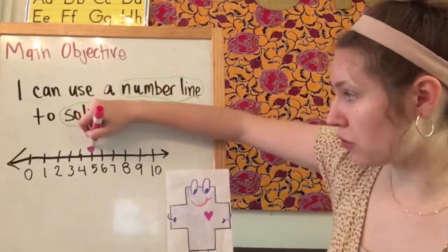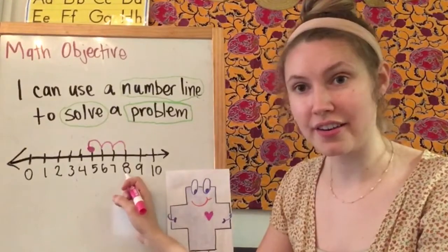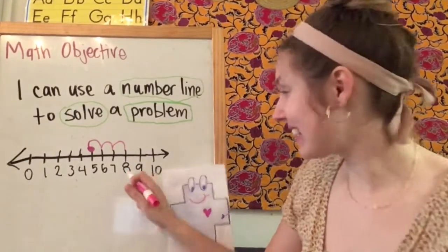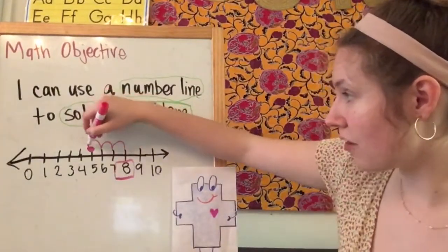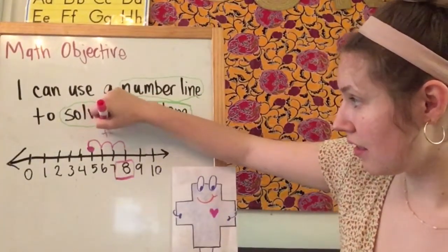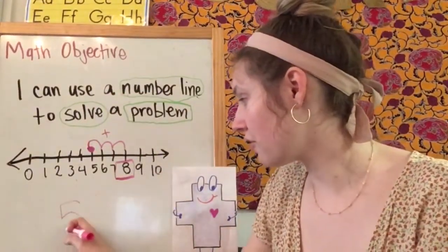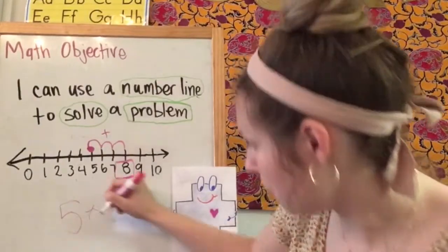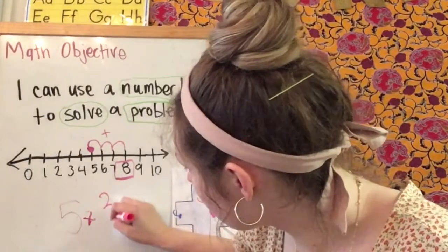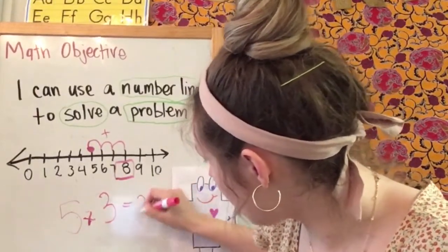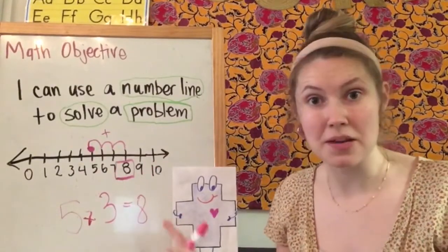So we're going to bounce three times: one, two, three. And what number did I land on? Eight. I landed on eight. So now I can see that five plus three is eight. And I'm going to write that out: five plus — oh, that is a squiggly wiggly plus sign — plus three equals eight. I was able to show with my number line that five plus three equals eight.